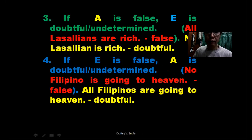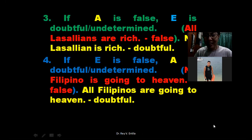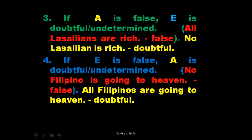Number three: if A is false — the universal affirmative — E is doubtful and undetermined. For example: 'All Lasallians are rich' is false, because it's a universal affirmative. Then 'No Lasallian is rich' is also doubtful — meaning can we really say that there is no Lasallian who is the child of a haciendero or wealthy? That would also be false.